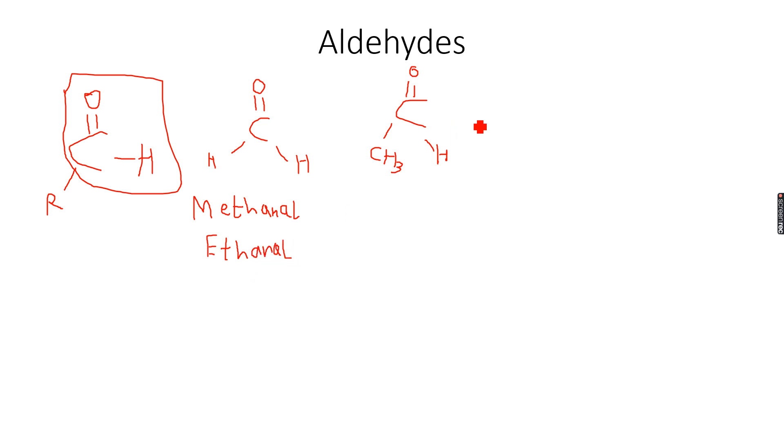This aldehyde is known as ethanal and ETH comes because of two carbon atoms and then the aldehyde naming, so methanal and ethanal. If you have three carbon atoms, this remains constant again, whereas this becomes CH3 CH2, there is an ethyl group instead of a methyl group.